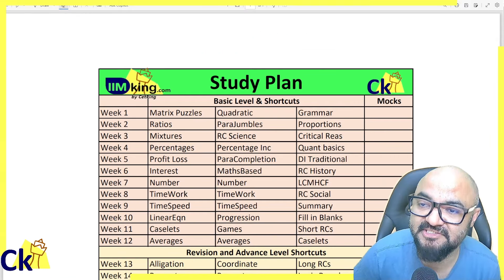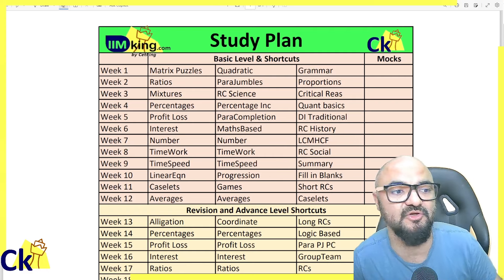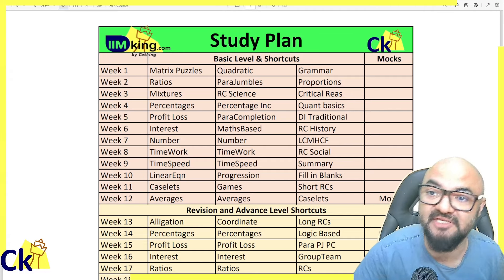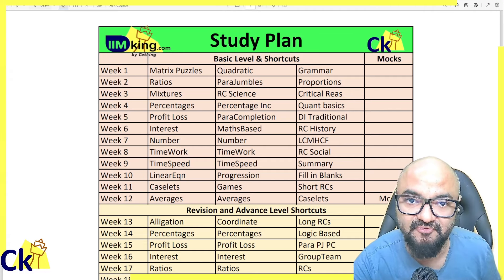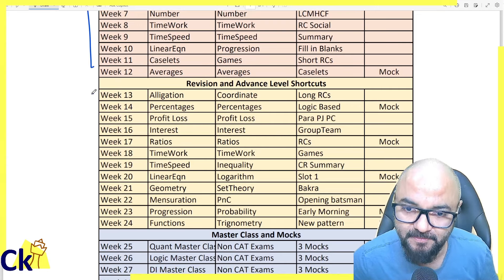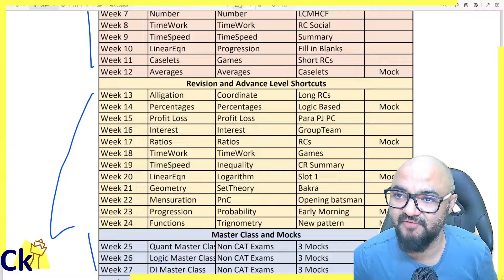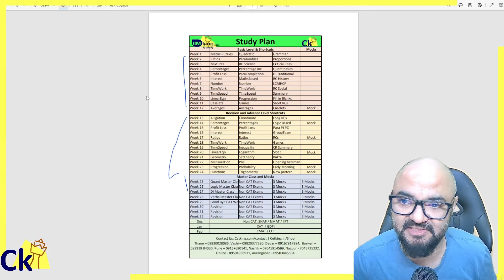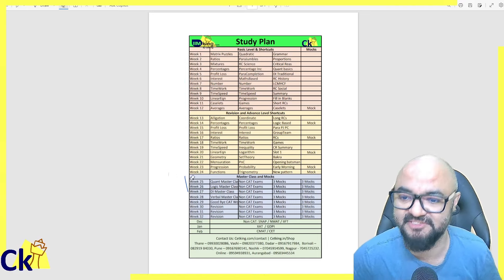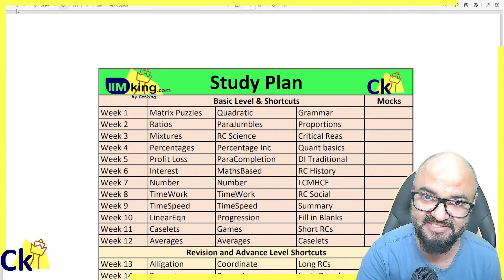This is our study plan for the CAT exam — the main plan. Please download it or take a screenshot. I've divided the CAT preparation into three phases: Phase 1, Phase 2, and Phase 3. Phase 1, which is starting now, is focused on completing your basic level.